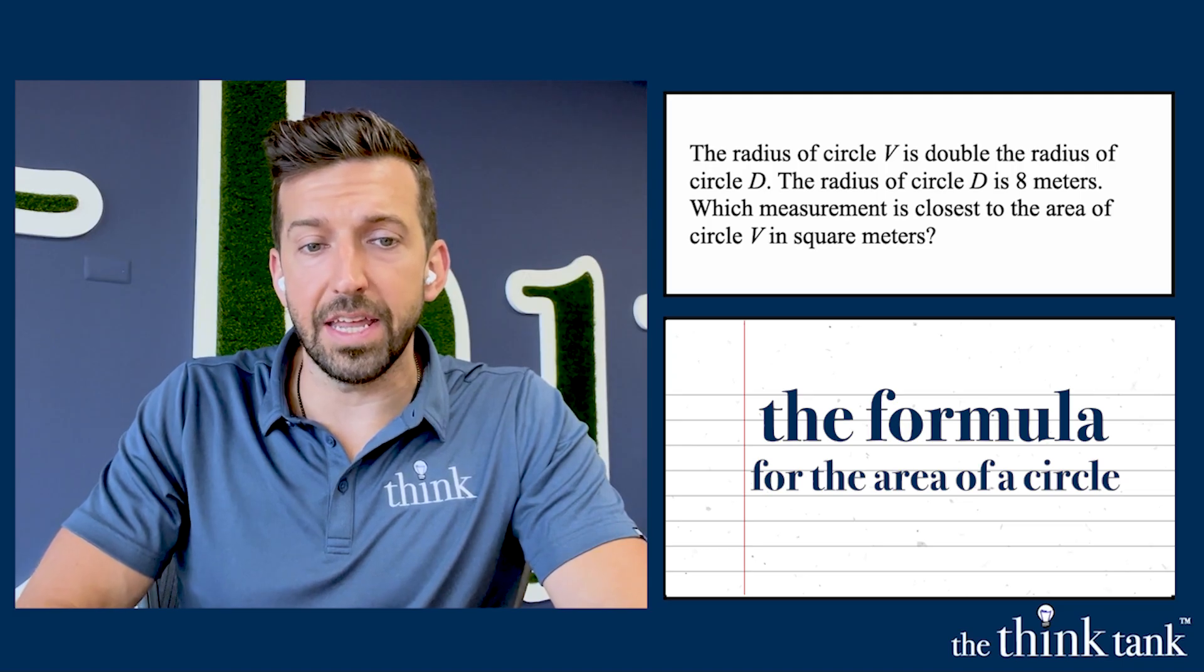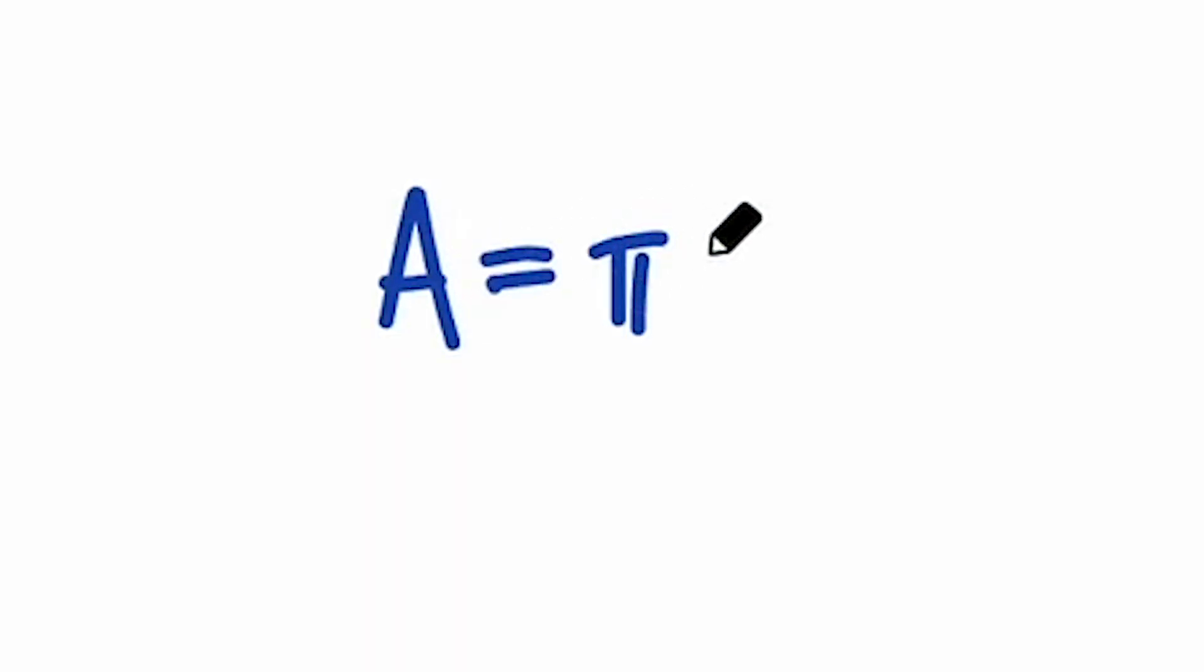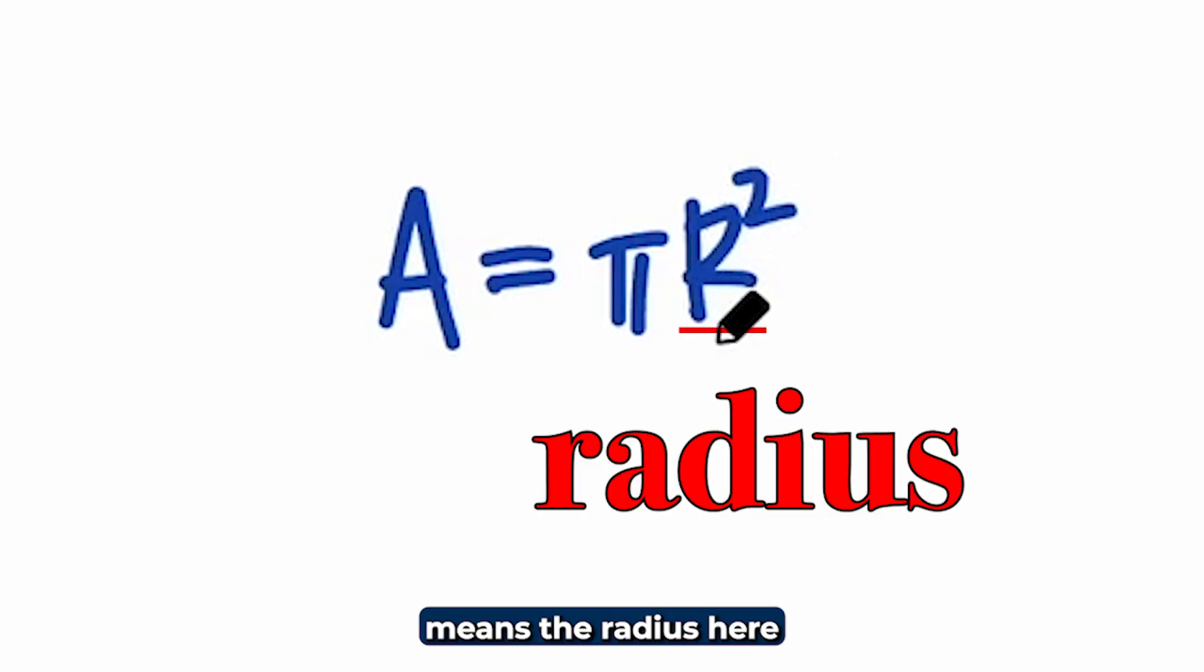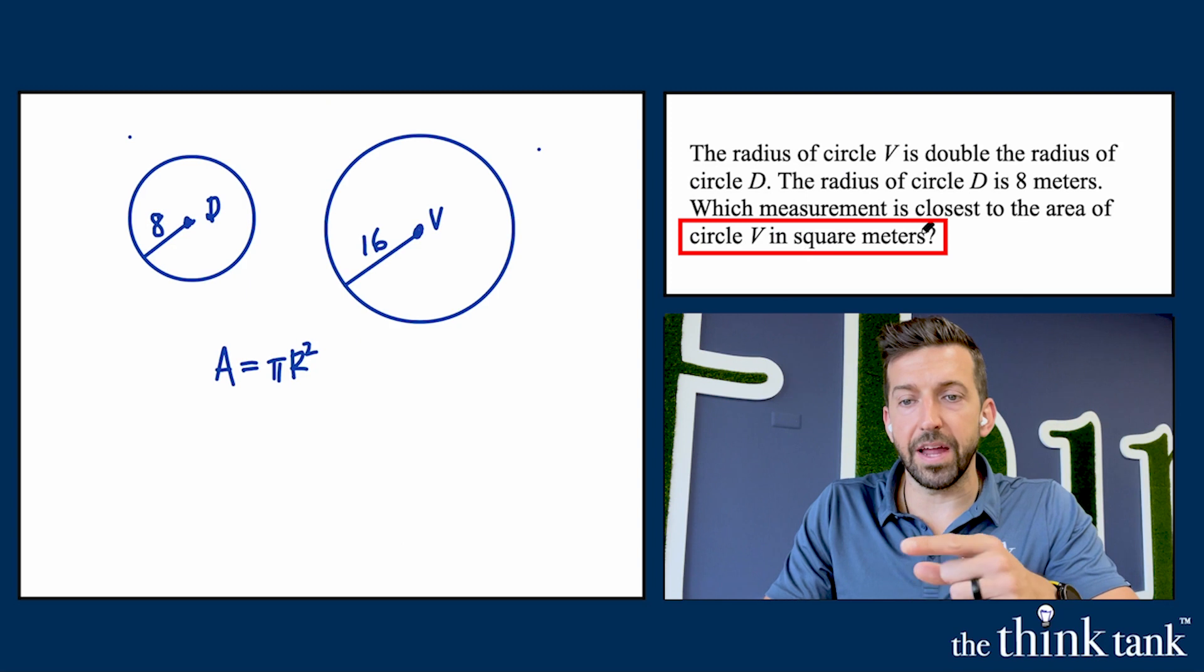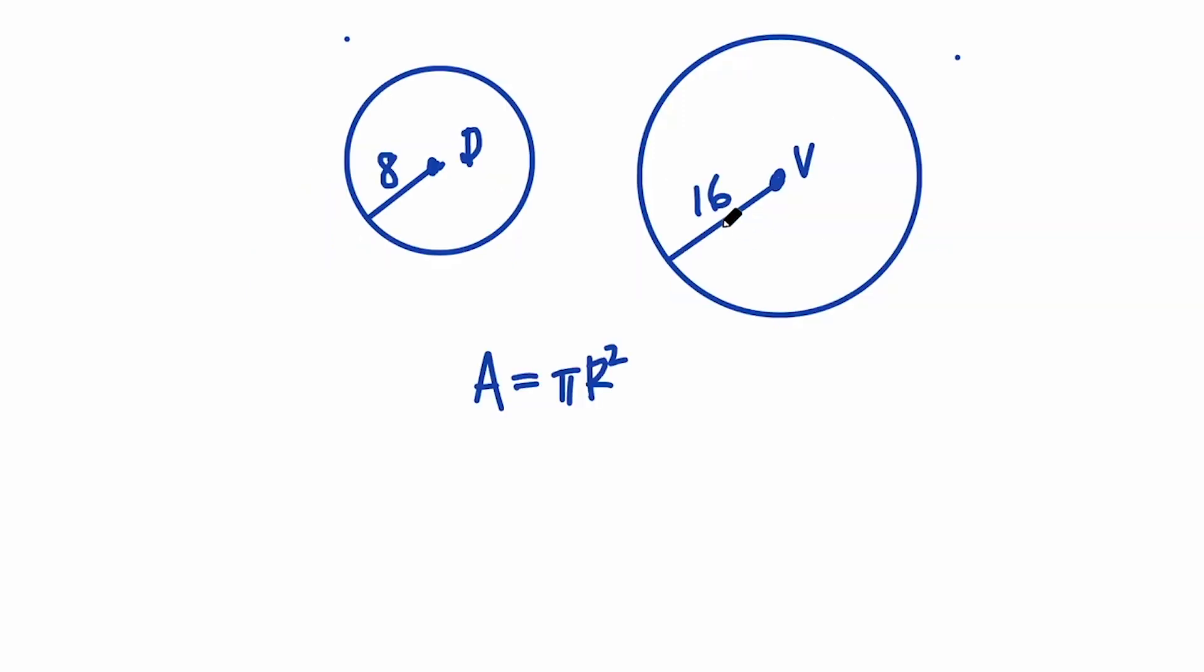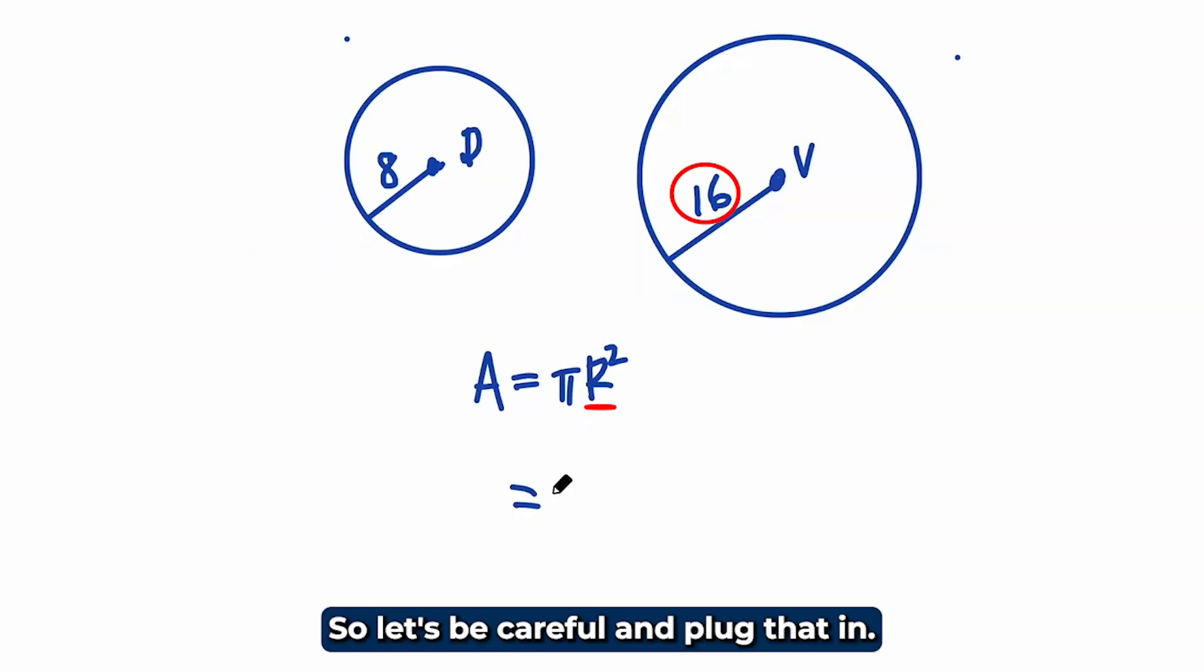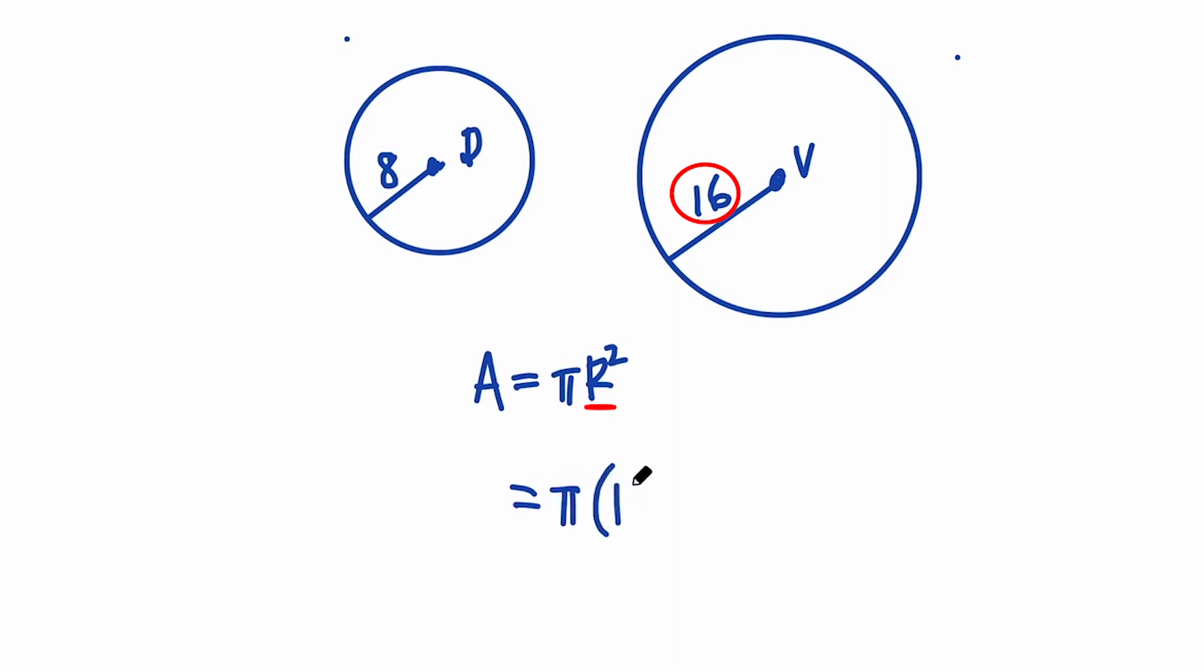R squared means the radius squared. In our smaller circle D, the radius is 8, but we're looking for the area in our larger circle V where the radius is 16. So let's be careful and plug that in. We've got pi times 16 squared, which should be the area of this larger circle.